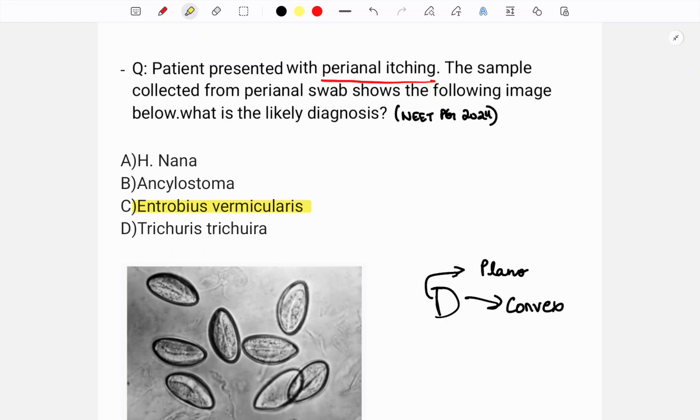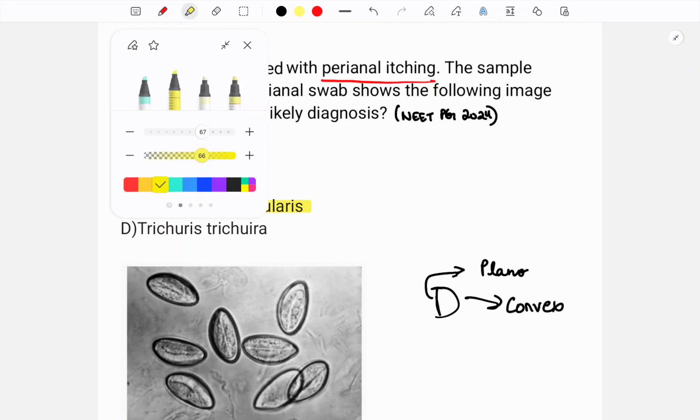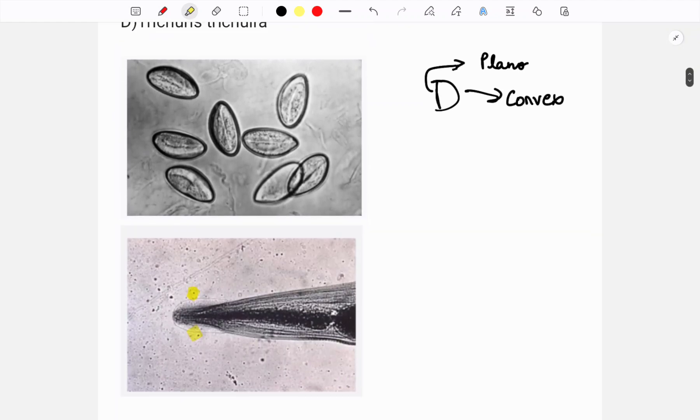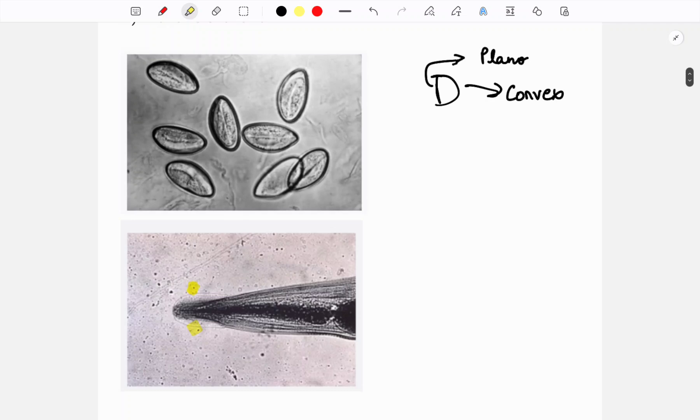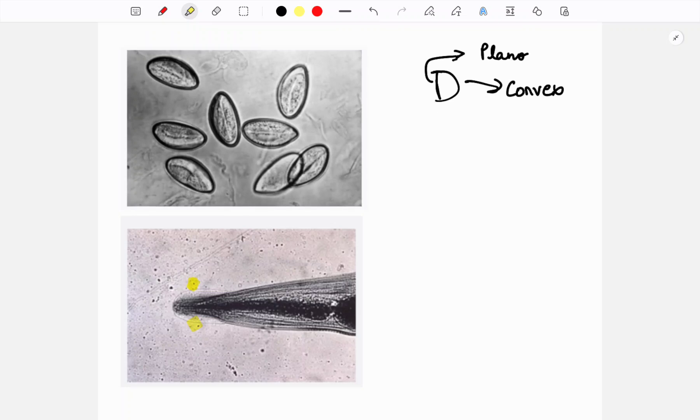We will still see the pictures. These were the two pictures given - one picture was of the egg and one picture was of the head end of the worm. The eggs shown here are D-shaped, which means they are plano-convex, and that is the feature of Enterobius vermicularis eggs.